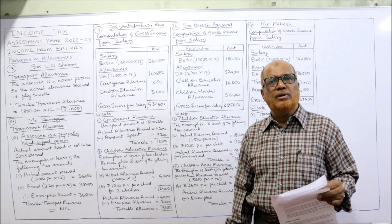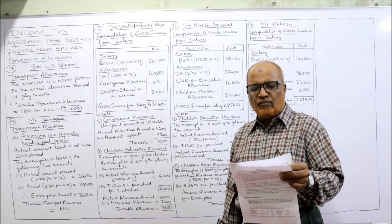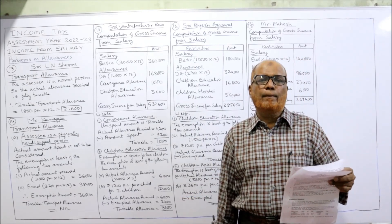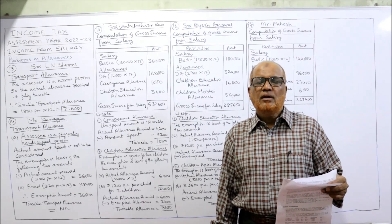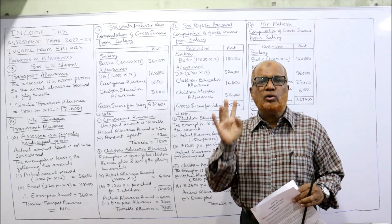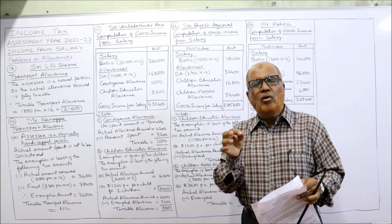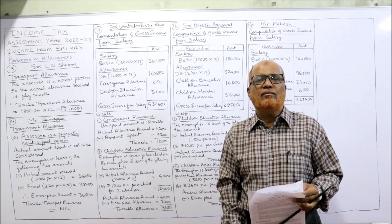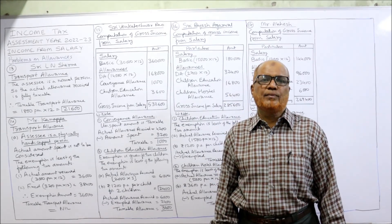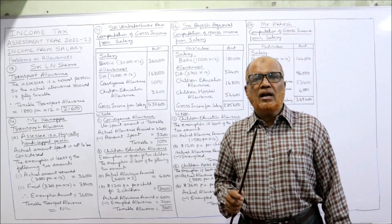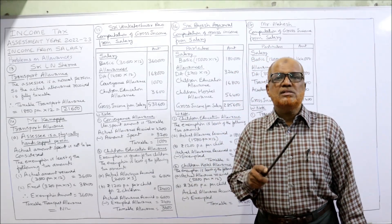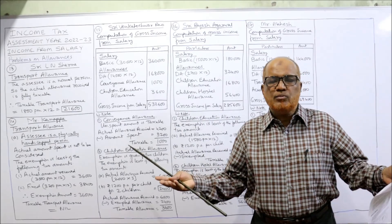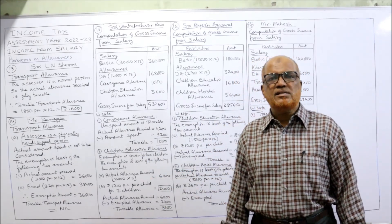Hostel allowance for his son is 5,000 rupees per month. Actual amount spent 2,000 per month — actual allowance should be ignored for hostel allowance. Hostel allowance exemption is given for a maximum of 2 children, but he got it for only one child. So 5,000 per month into 12 equals 60,000 rupees received. Exemption is 300 per month or 3,600 per annum per child; for one child, 3,600 is exempted.